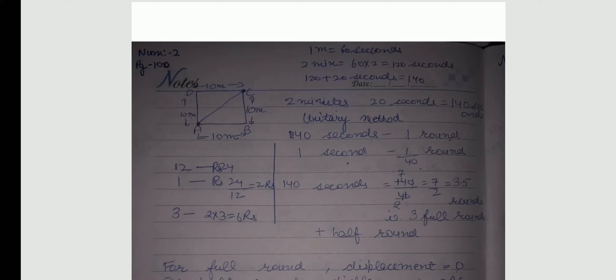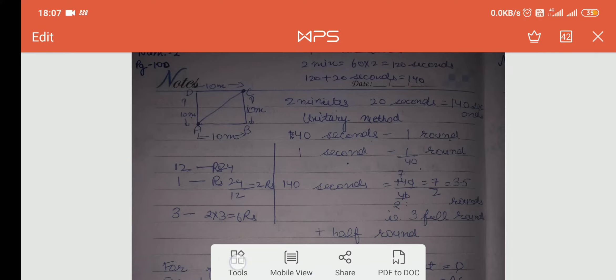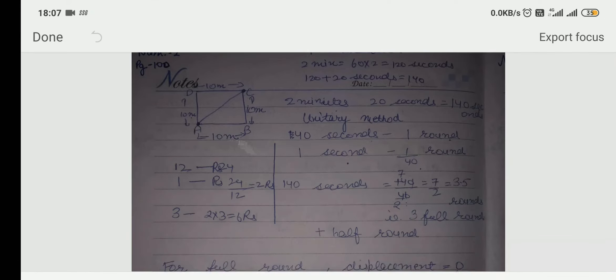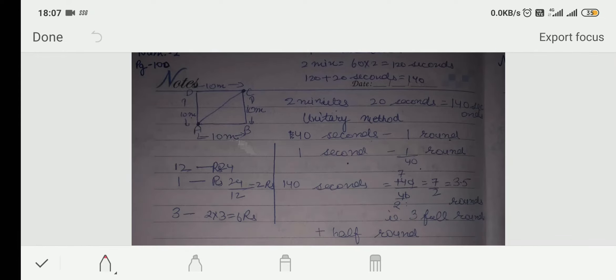First, we will convert 2 minutes 20 seconds into seconds. We know that 1 minute is equal to 60 seconds. So, 2 minutes will be 120 seconds and 120 plus 20 seconds will become 140 seconds. So, make a unitary method.